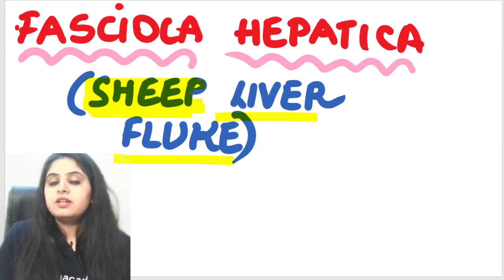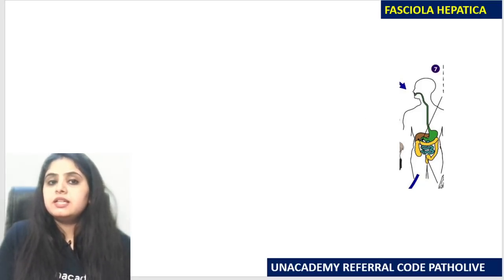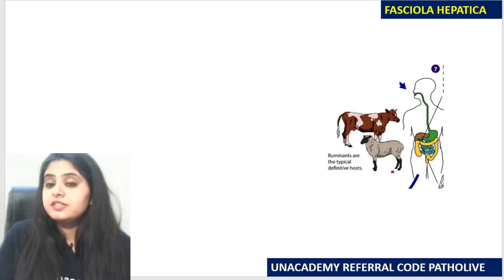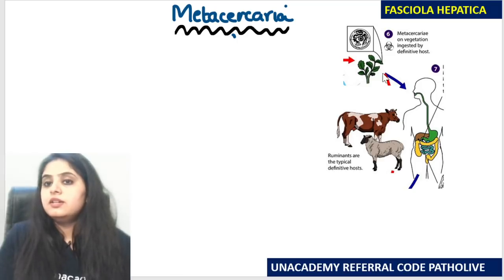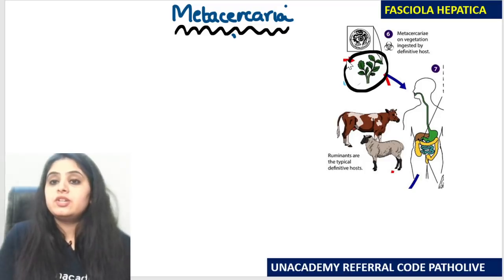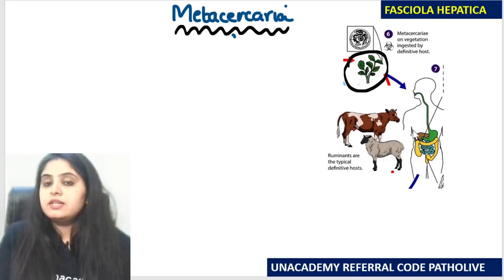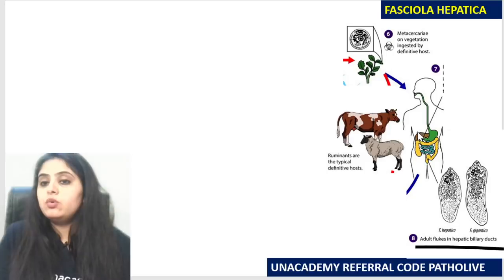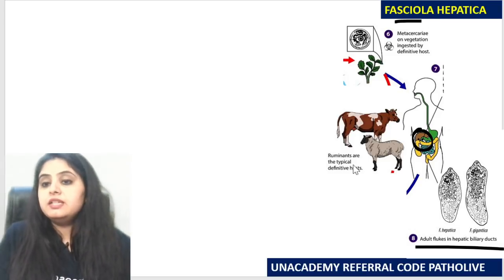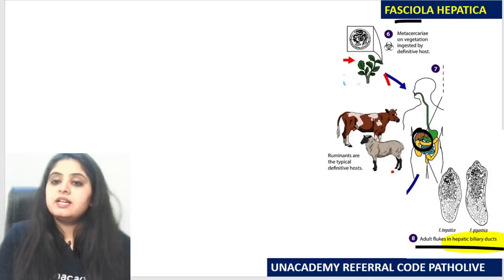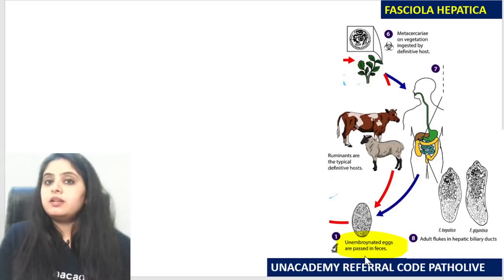Let's start the life cycle of Fasciola hepatica. We begin with the human — other definitive hosts include sheep and cattle since this is the sheep liver fluke. The form that enters us, like every trematode, is the metacercaria larva — this time from ingesting aquatic vegetation. The adult flukes go into the hepatic biliary system. Unembryonated eggs are then passed in the feces, after which they become embryonated.